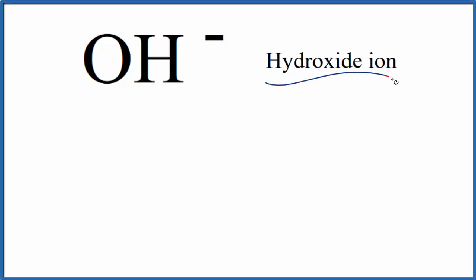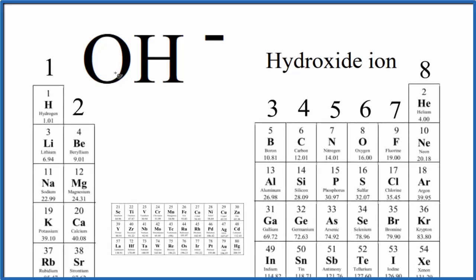To write the Lewis structure for the hydroxide ion, let's first count up the valence electrons. Oxygen is in group 16, sometimes called 6A. It has six valence electrons.